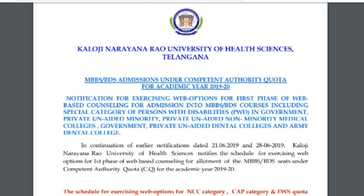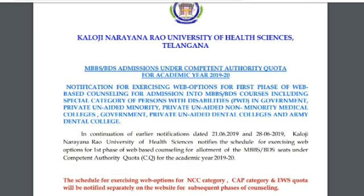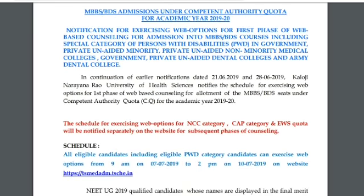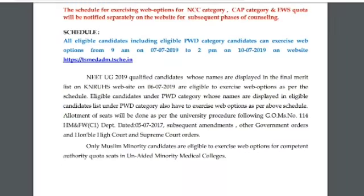Click on the bell icon. Minority and PWD candidates, or special category candidates, also have options. PWD candidates: 7-7-2019 morning 9 AM to evening 2 PM, and 10-7-2019 July 10th afternoon 2 PM.